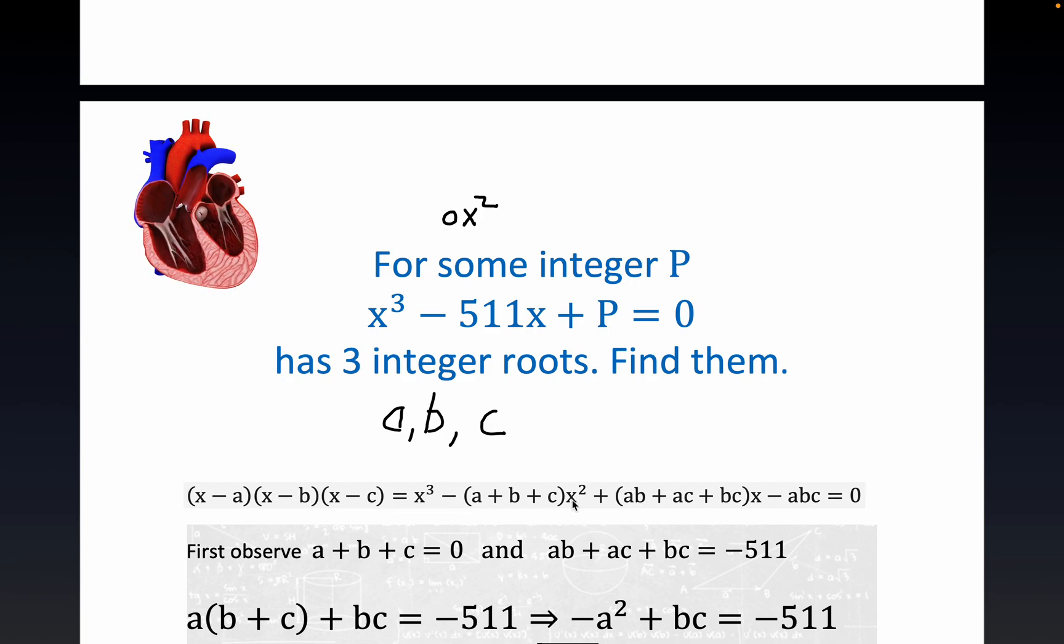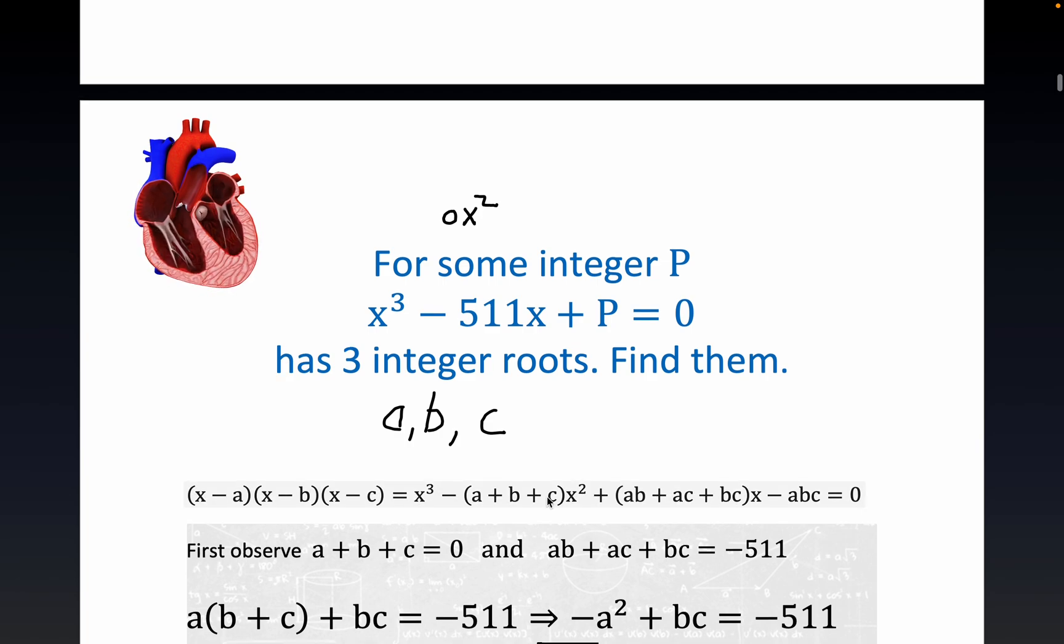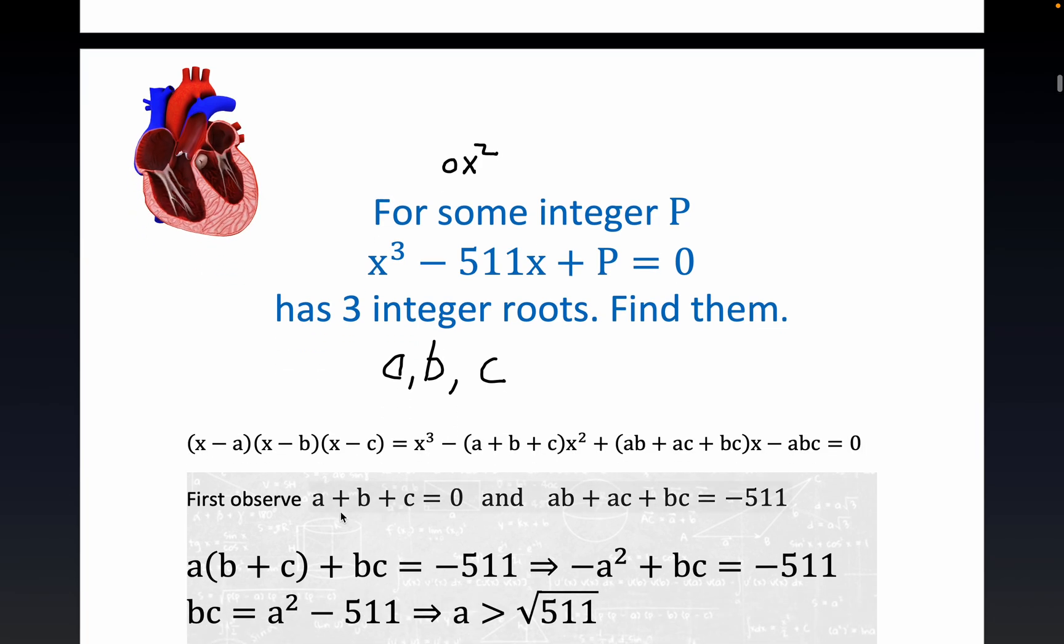Minus the sum of the roots is the coefficient of x squared, or if it's a degree n it would be the coefficient of n minus 1 term. That's why we can say a plus b plus c has to equal zero because literally there's a zero x squared term not visible but present in this expression.